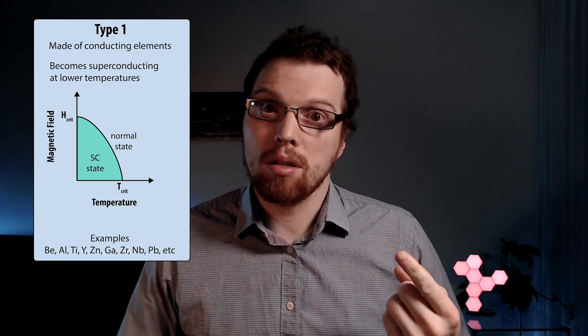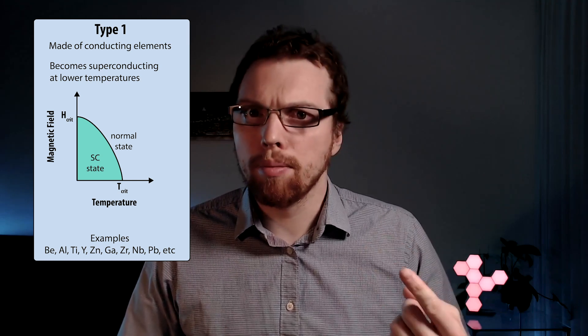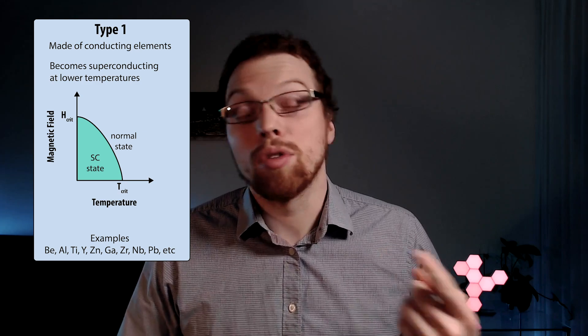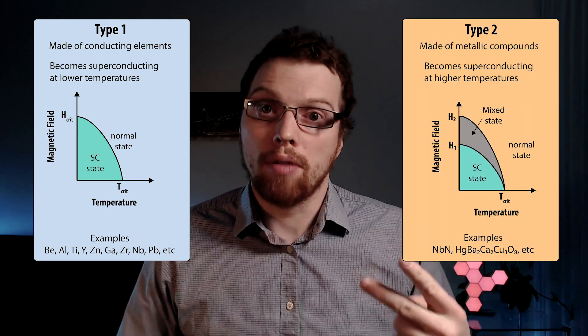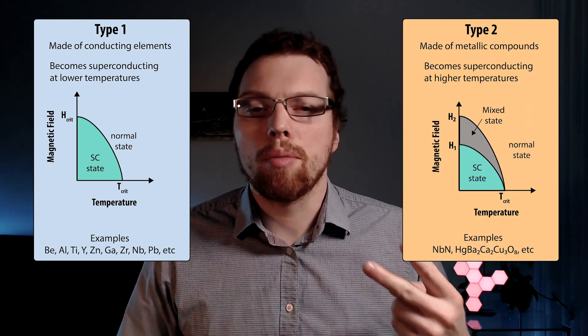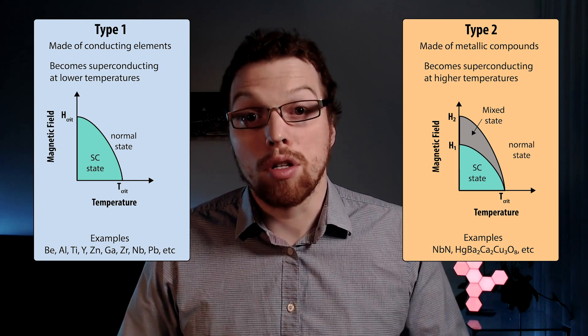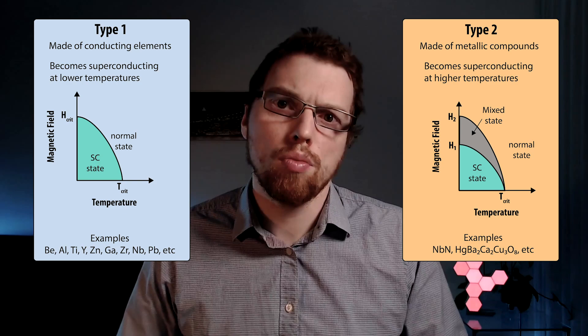There are two distinct types of superconductor. Type 1 is elements like lead and aluminum, and typically have a very low critical temperature below 10 Kelvin. Type 2 are made of alloys, for example, yttrium barium copper oxide, and typically have a critical temperature that is much higher than a type 1 superconductor.